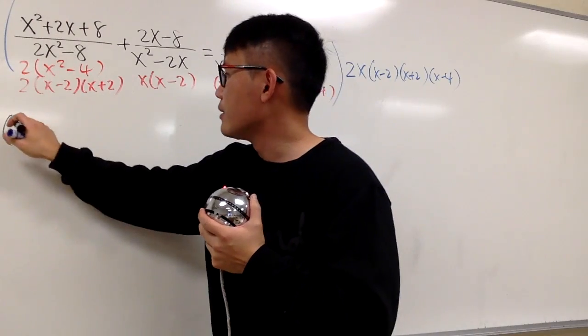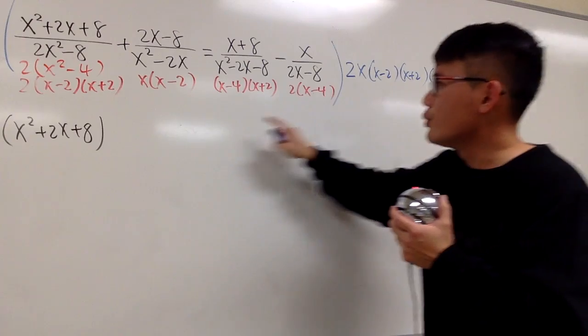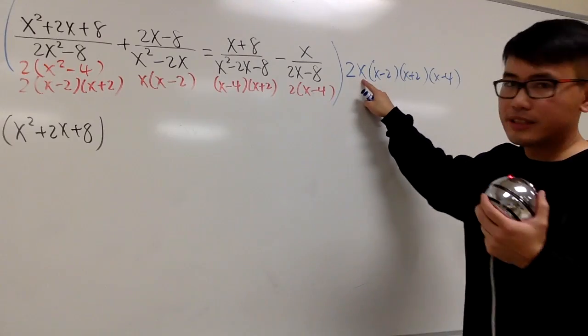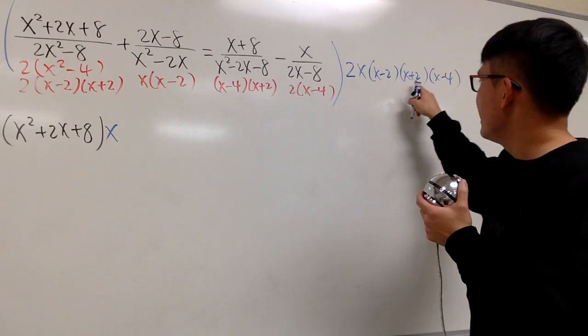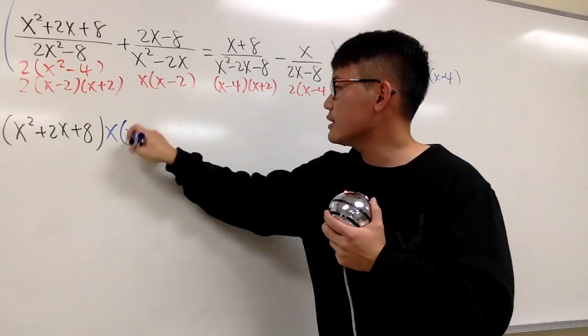When we do this times that, I will put down x plus 8. The 2 will cancel. This x will stay. The x minus 2 will cancel. x plus 2 will also cancel. x minus 4 at the end.